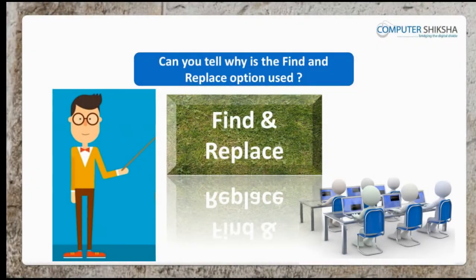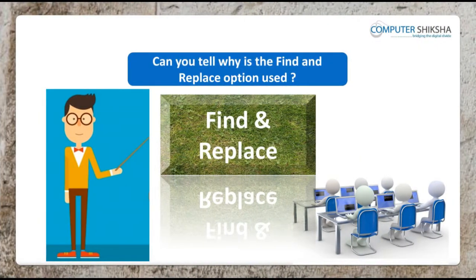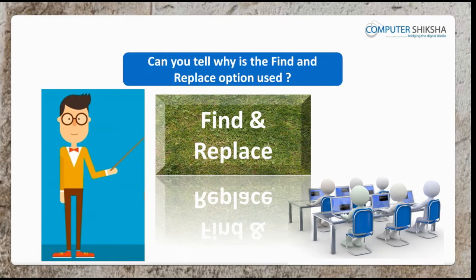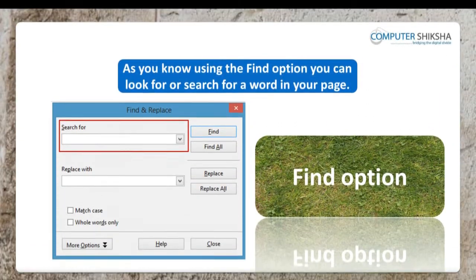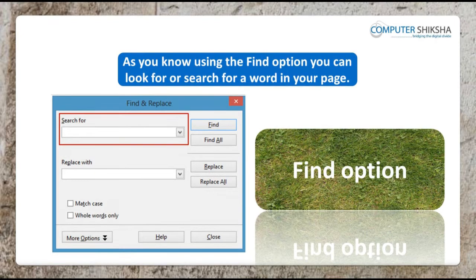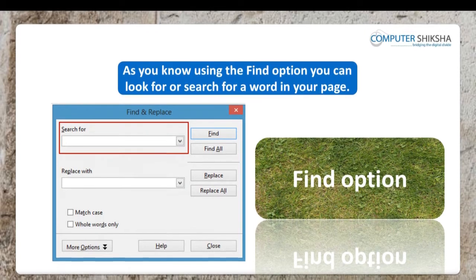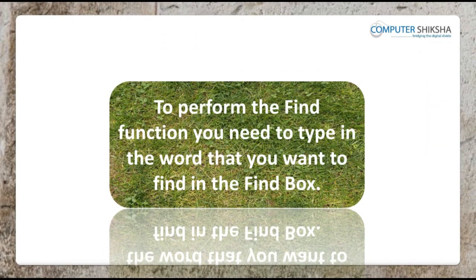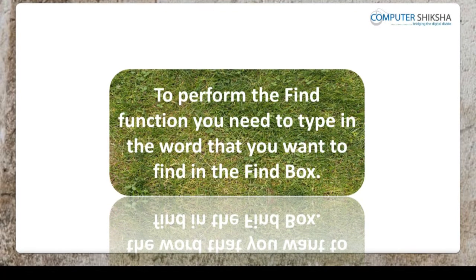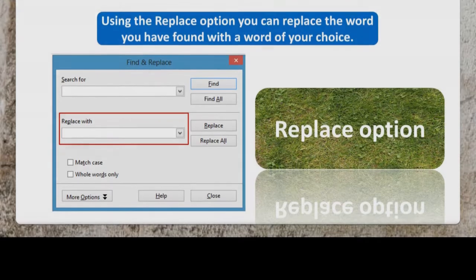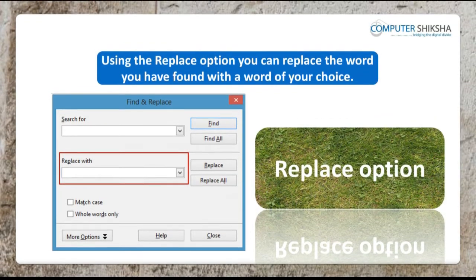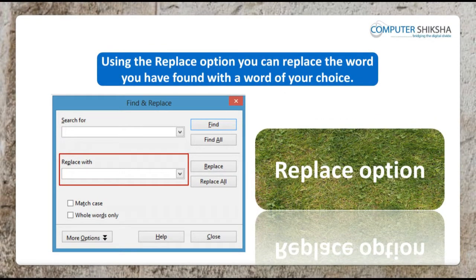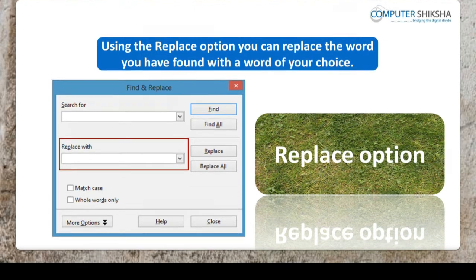Can you tell why the find and replace option is used? As you all know, using the find option, you can look for or search for a word in your page. To perform the find function, you need to type in the word that you want to find in the find box. Then, using the replace option, you can replace the word you have found with a word of your choice.